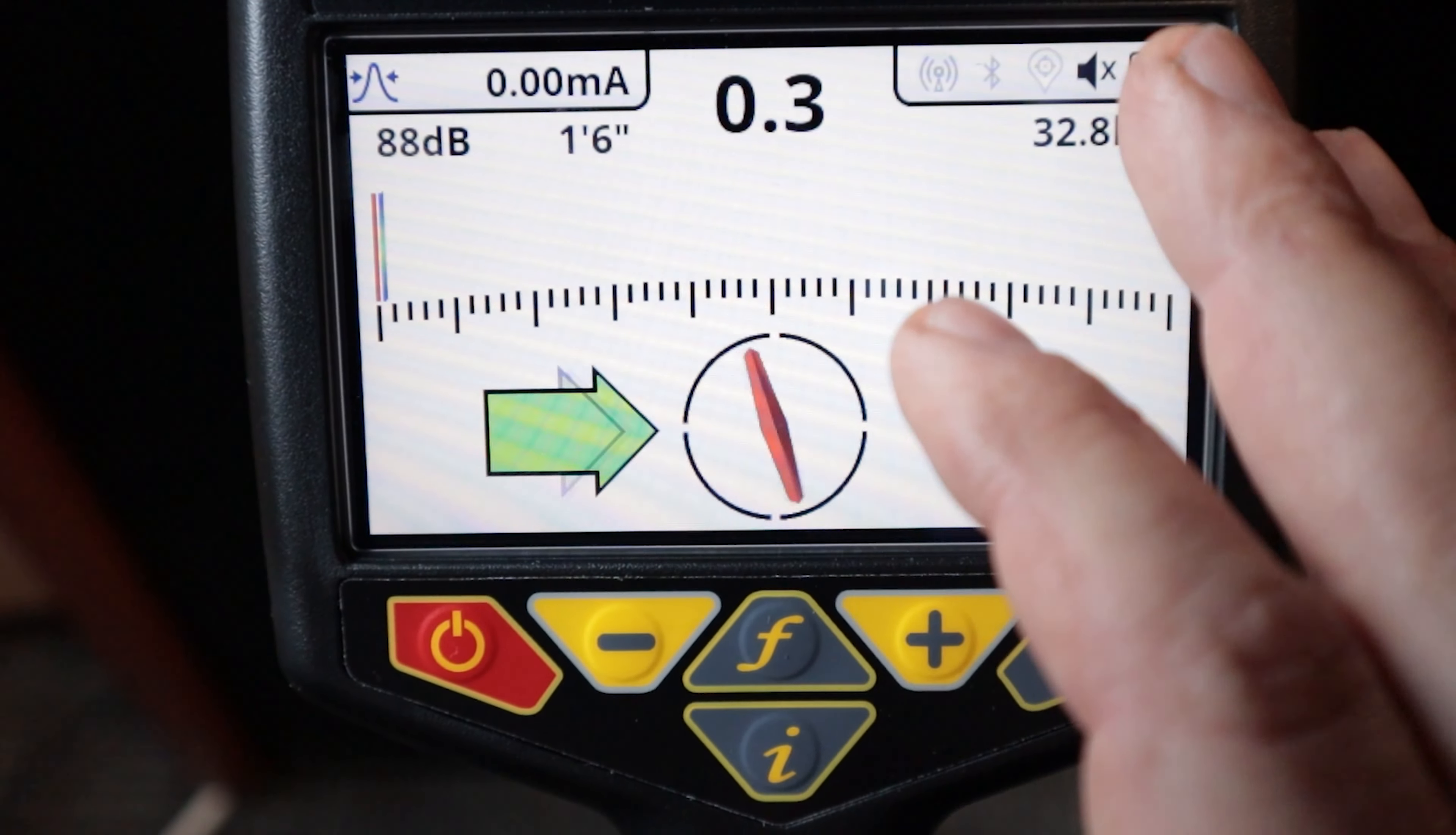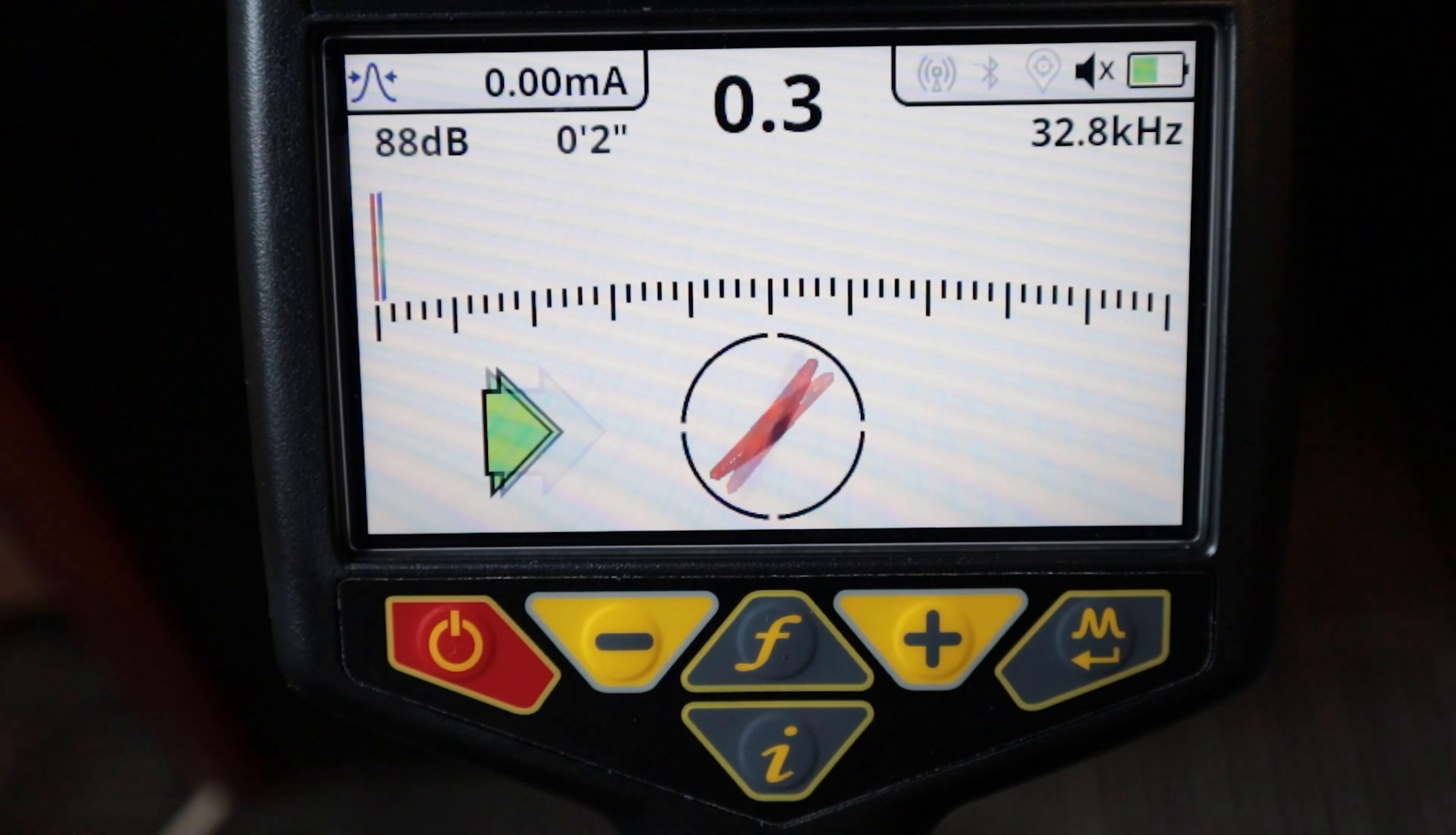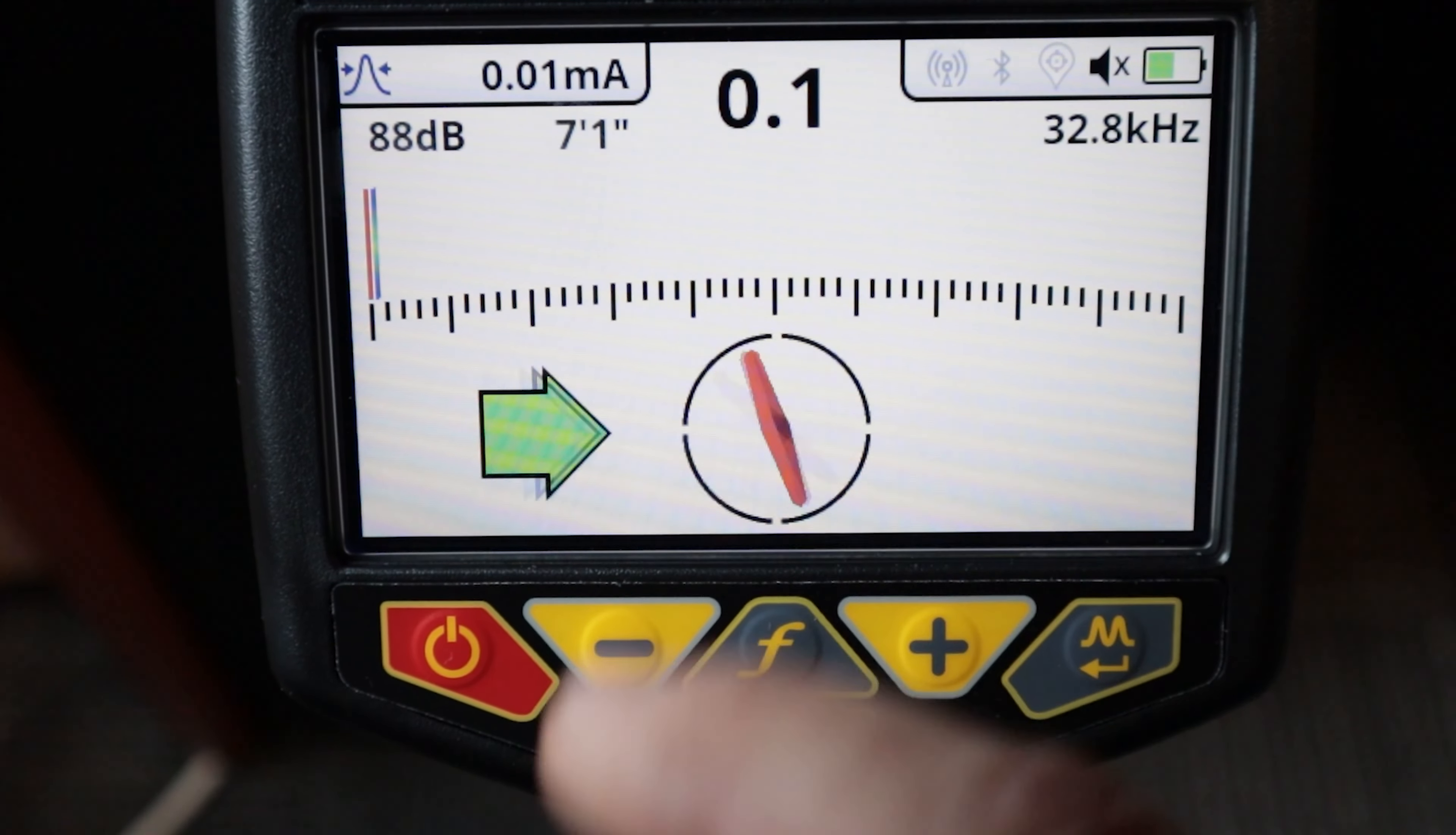Starting from the top left and moving across the screen, up here we have our locate mode. This is peak with arrows, my preferred locate screen and a lot of folks preferred locate screen. This is going to allow you to have your peak bar and your arrows, confirmation arrows, on screen at the same time. Next thing we see is our milliamps, that's how much current we have on our line. Next is the number that is basically a reference of this peak bar right here.